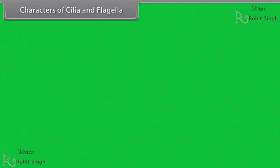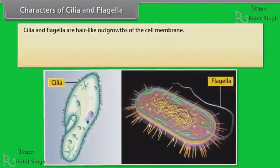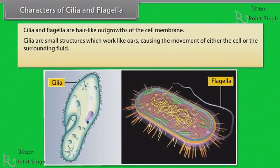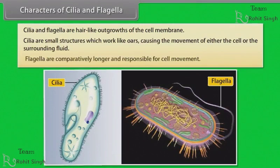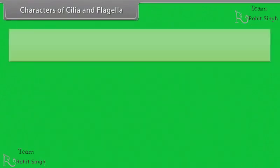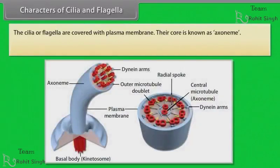Characters of cilia and flagella. Cilia and flagella are hair-like outgrowths of the cell membrane. Cilia are small structures which work like oars, causing the movement of either the cell or the surrounding fluid. Flagella are comparatively longer and responsible for cell movement. The cilia or flagella are covered with plasma membrane.